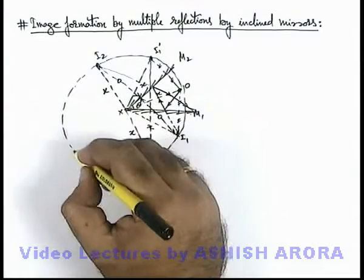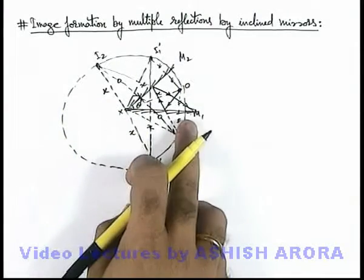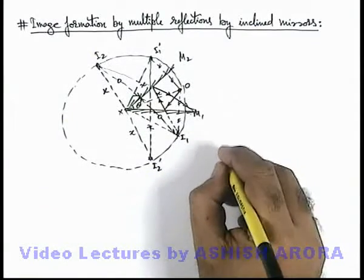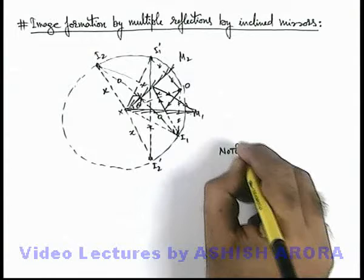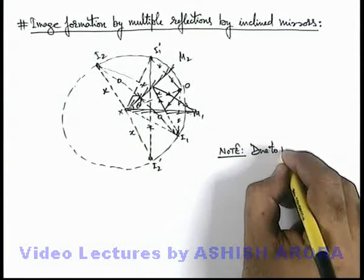So all those images which are found by successive reflection due to inclined mirrors, we can see all these images will lie on a circle, so you must write down this note which is quite useful: due to multiple reflections.